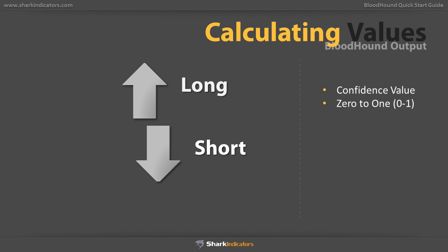0 means a low confidence and 1 a high confidence. Thus, if you have a 1 for the long side and a 0 for the short side on a particular bar, your system is favoring the long side. You can specify that a valid signal requires the confidence value to exceed a certain number.